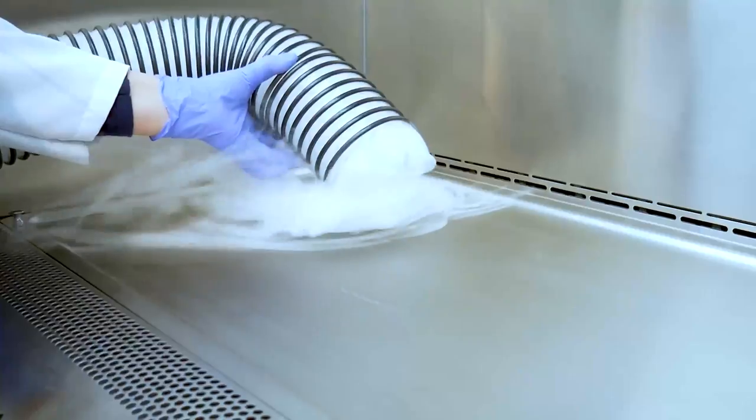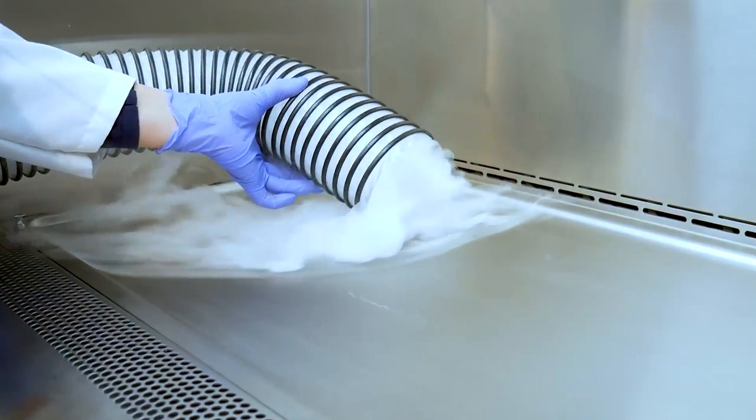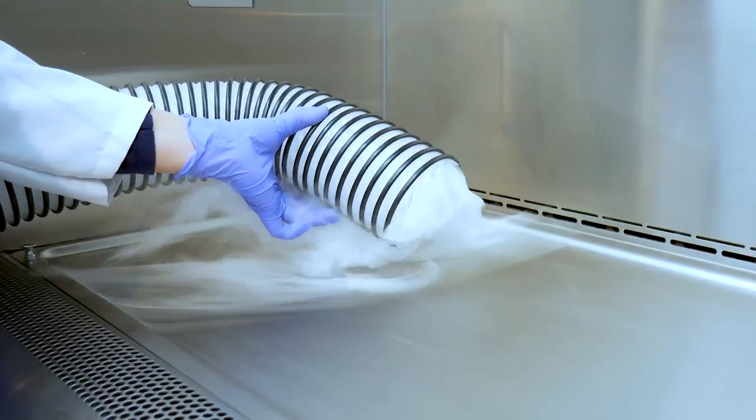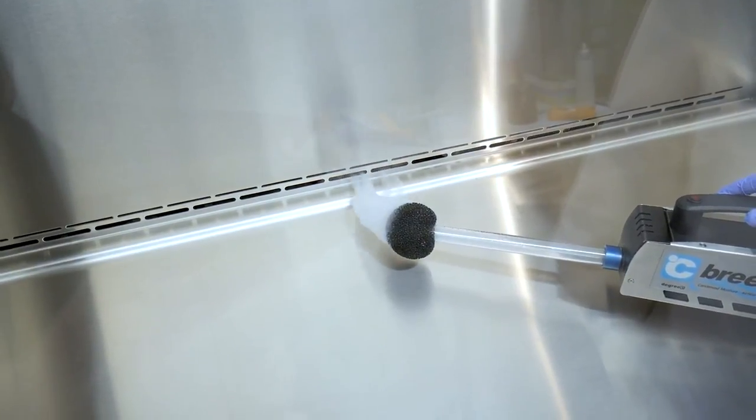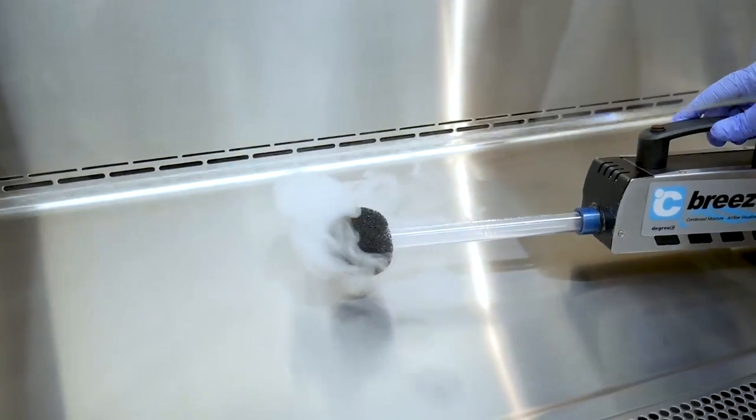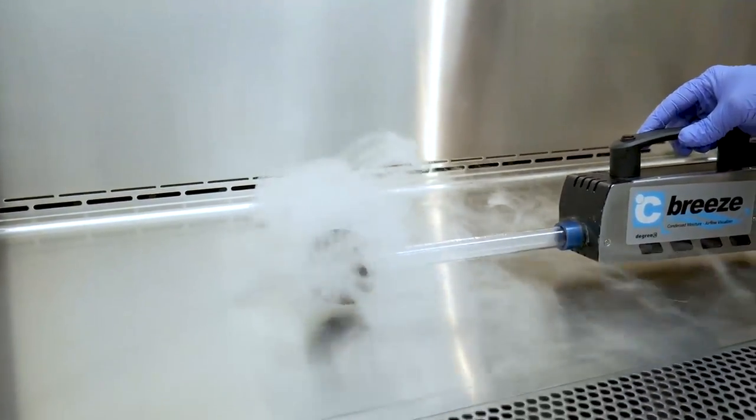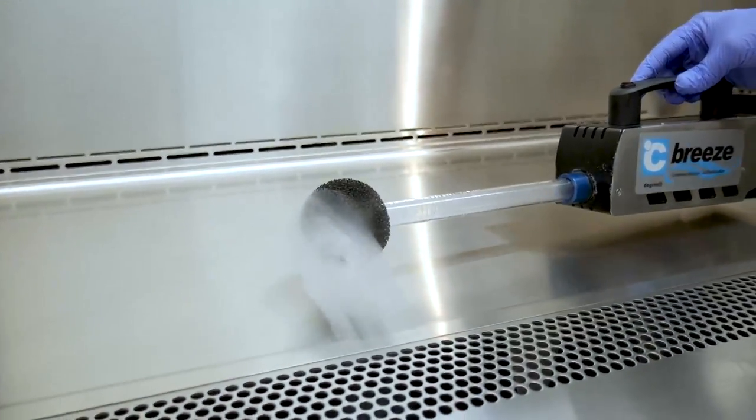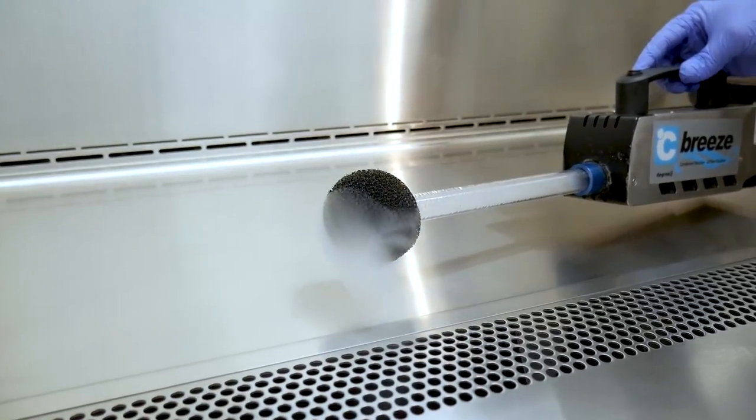As downflow air nears the cabinet's work surface, the airflow undergoes a phenomenon called smoke split, where a portion of the air flows to rear air slots and the remaining air flows to the front inlet grill. Higher risk activities should take place behind this line for maximum containment.